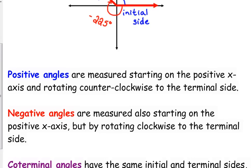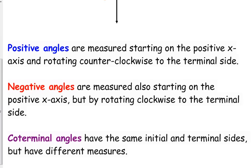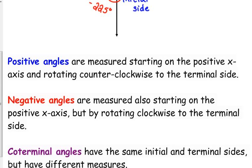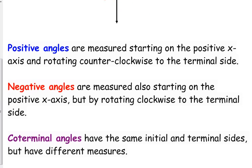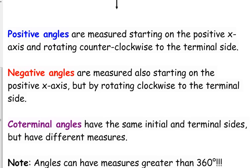And we call these co-terminal angles. 135 degrees and negative 225 degrees are an example of co-terminal angles. Co- meaning same or together — they have the same terminal side, but they just have different measures depending on the orientation.